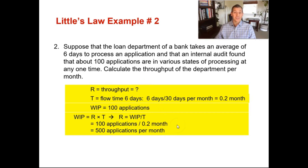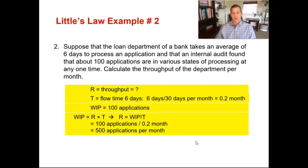You've now calculated Little's Law through two examples — one where we solved for WIP, and one where we solved for throughput. Little's Law shows the long-term relationship between inventory, throughput, and flow time of a production system in a steady state. It's very useful to have this formula when you're looking at lean operations.